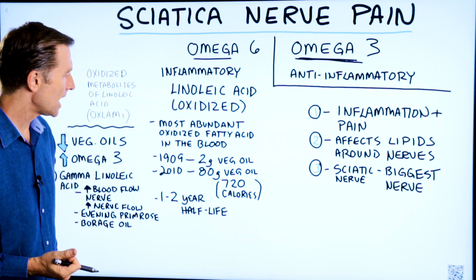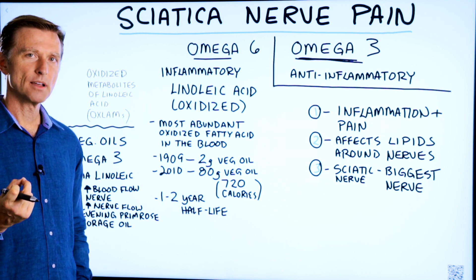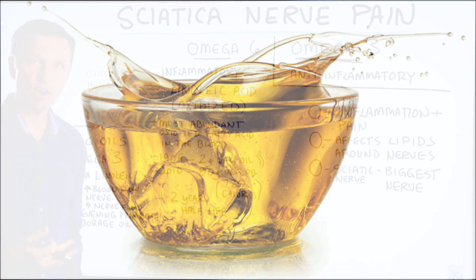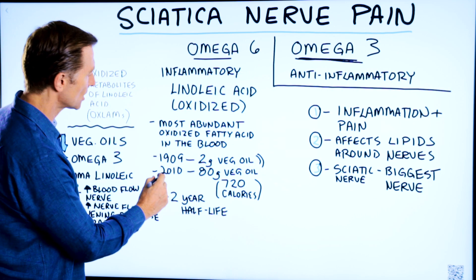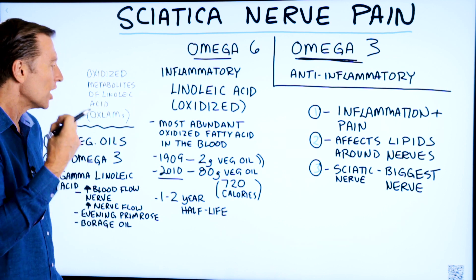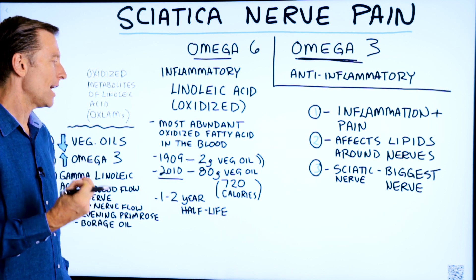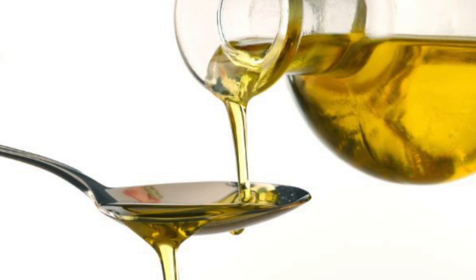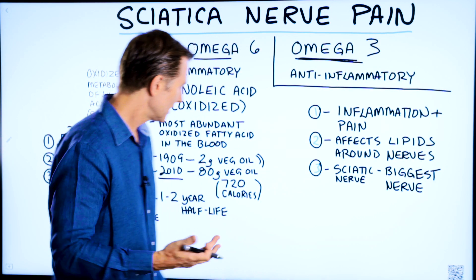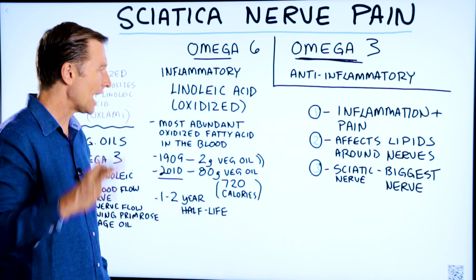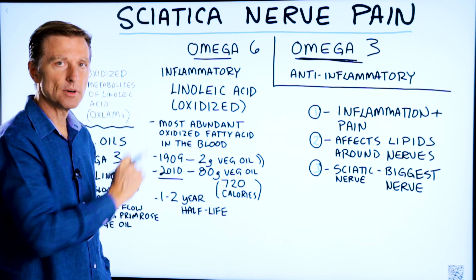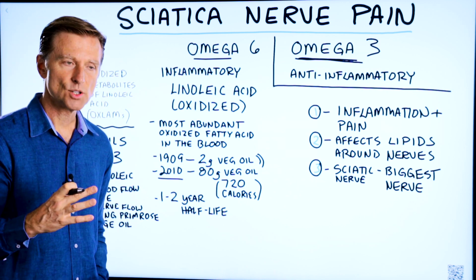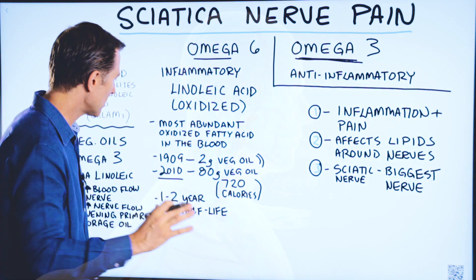In 1909, we consumed only two grams of vegetable oil — which really is the seed oils. About ten years ago in 2010, we were consuming 80 grams of vegetable oil every single day. That is 720 calories. If you're consuming about 2,000 calories a day, that's like one-third of all your calories coming from this type of fat. And the problem is that it makes up your cell membranes, creating a lot of problems throughout the entire body.